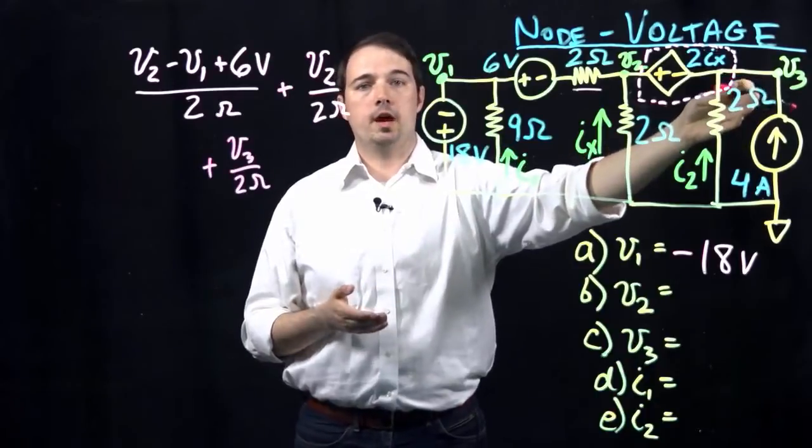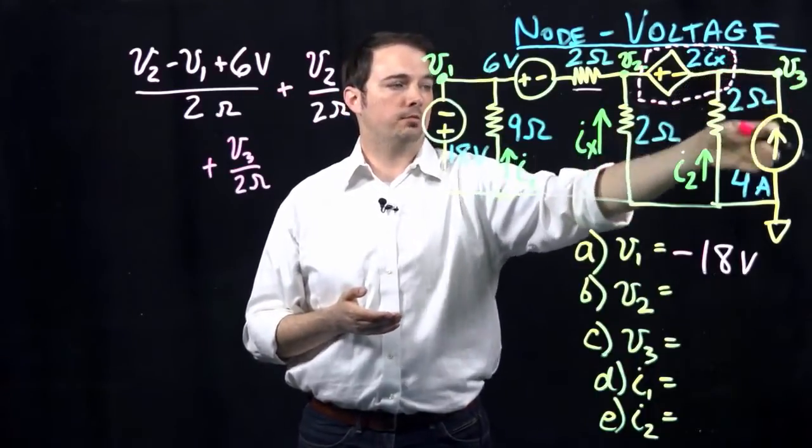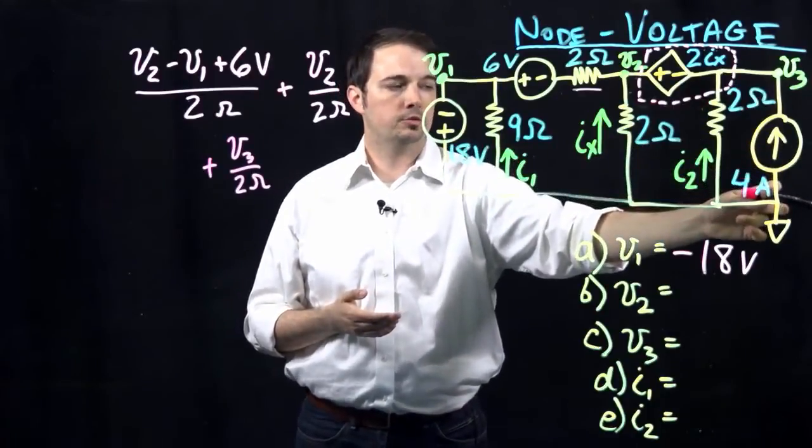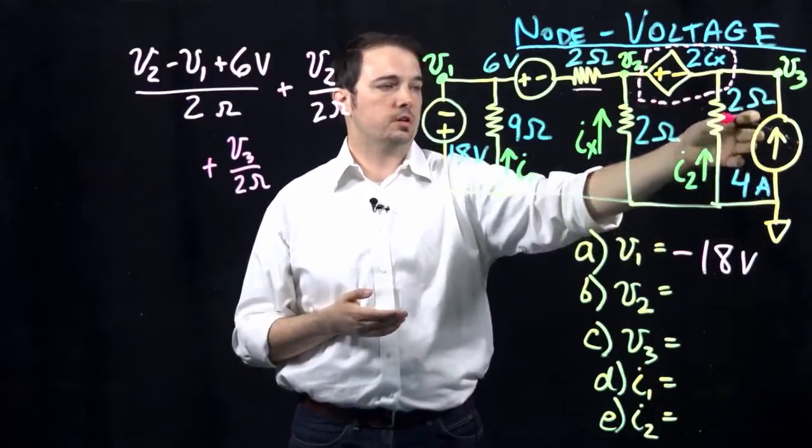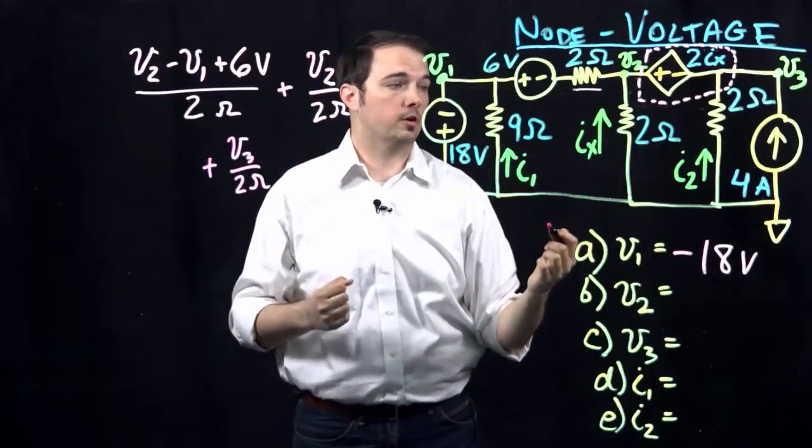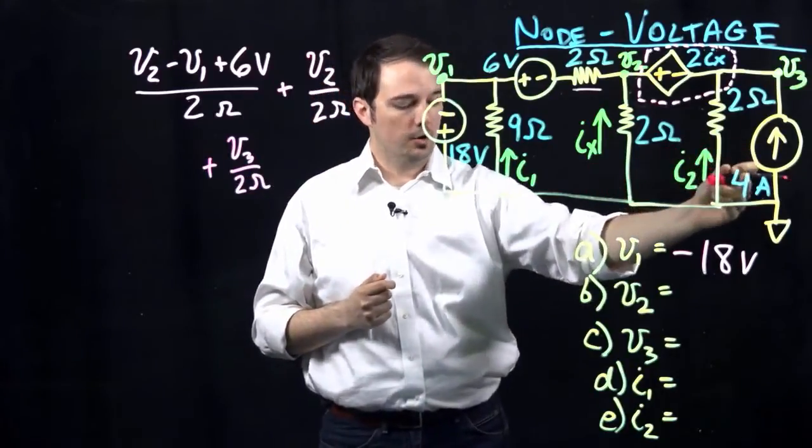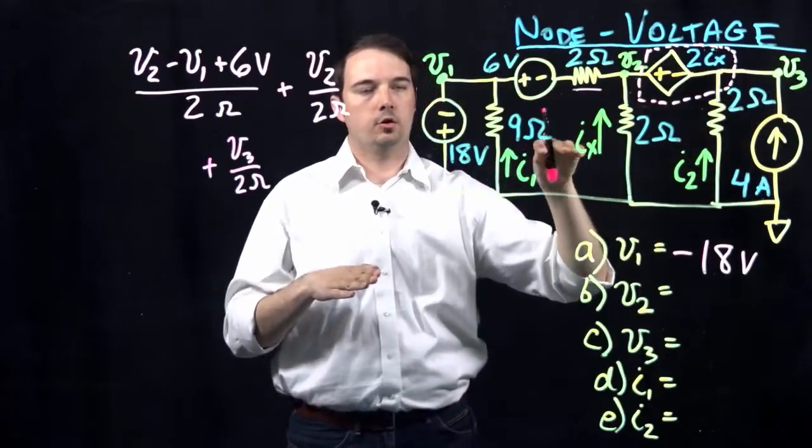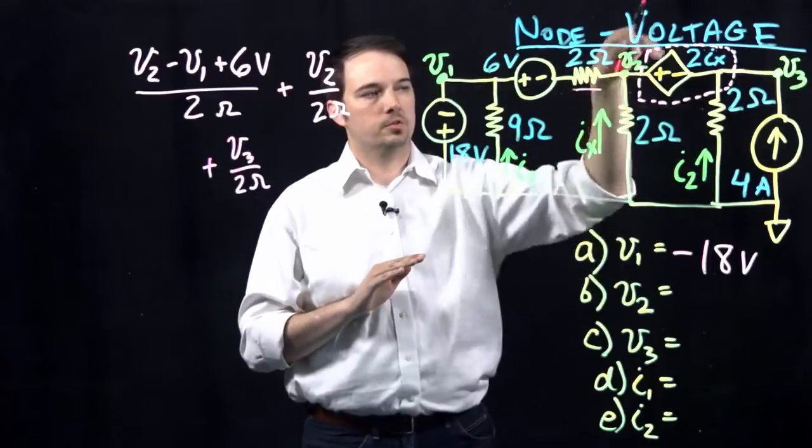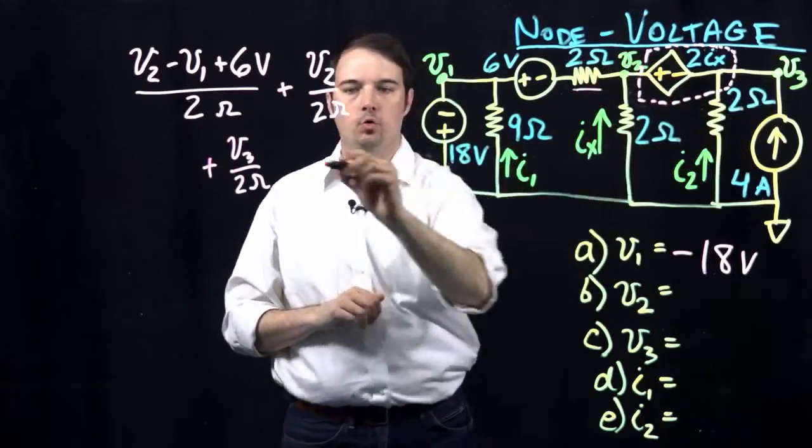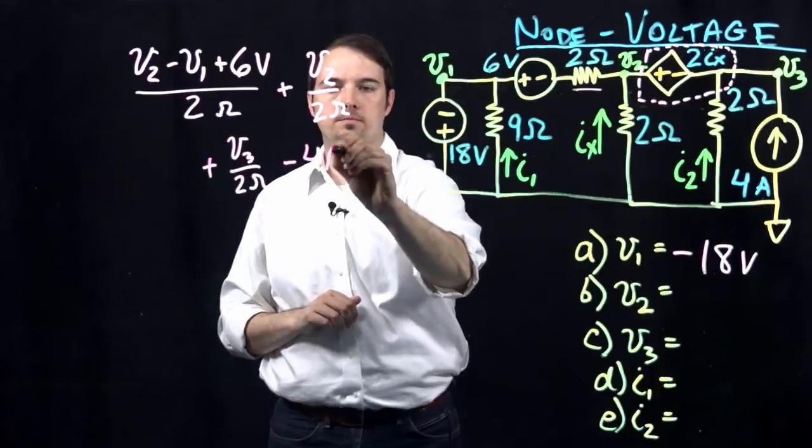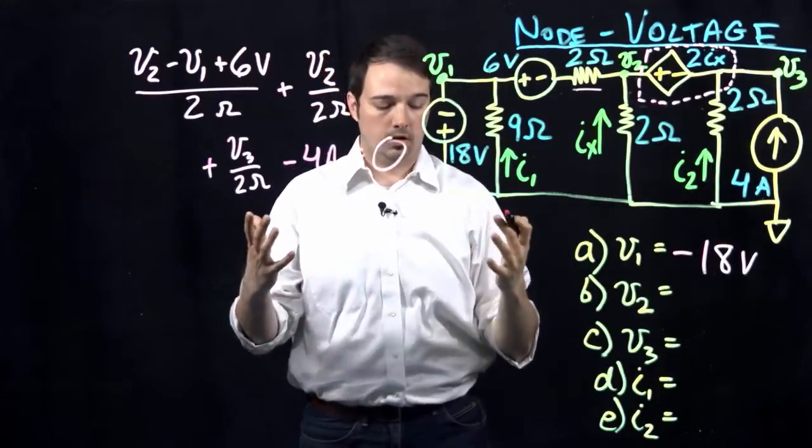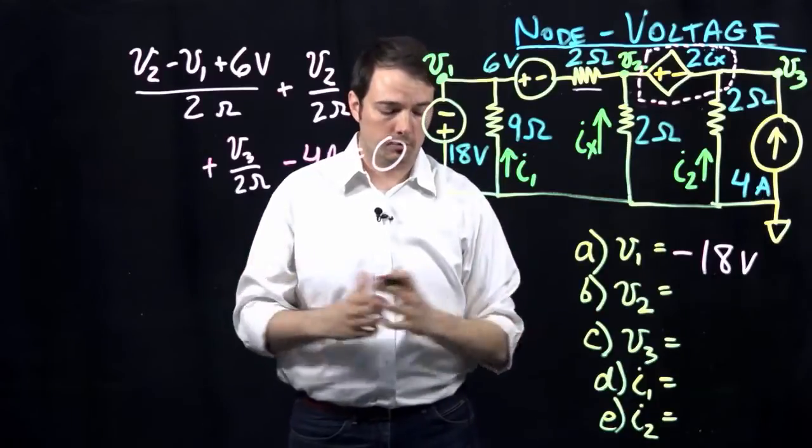And then, the final branch that we're looking at is what's the current traveling down from V3 down this branch through back to my reference. And so, you see here I have a current source, so of course that's defining what my current value is overall. But I note that because the 4 amp current is directed inwards, but we're always writing node voltage expressions in terms of the current flowing out, I need to subtract that 4 amps. So, this will be minus 4 amps. And again, all of those then have to sum to zero based on what we know about doing the node voltage analysis.